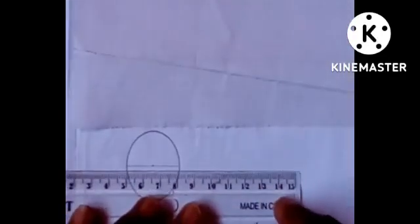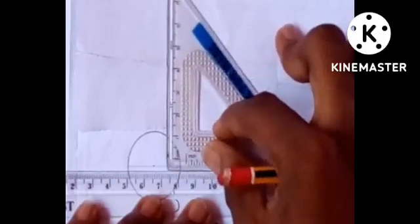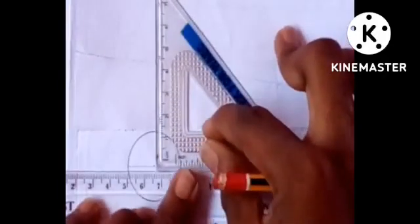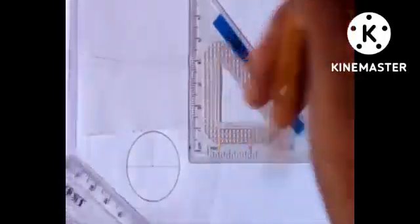Then I will slide my set square till it is located just on that point. You can see it at that point. Then I will draw a line and extend this line downwards.